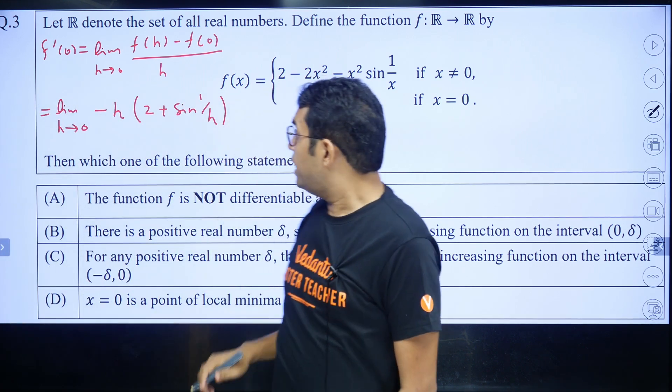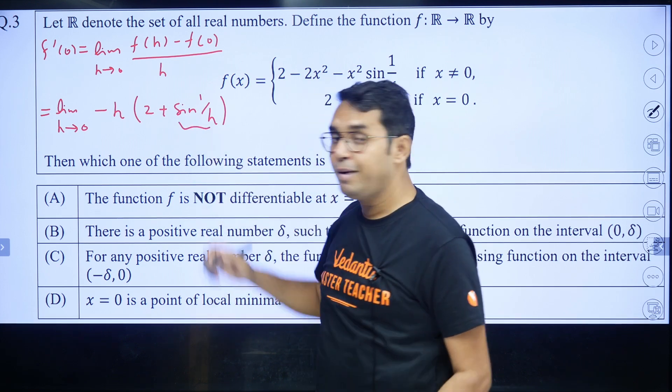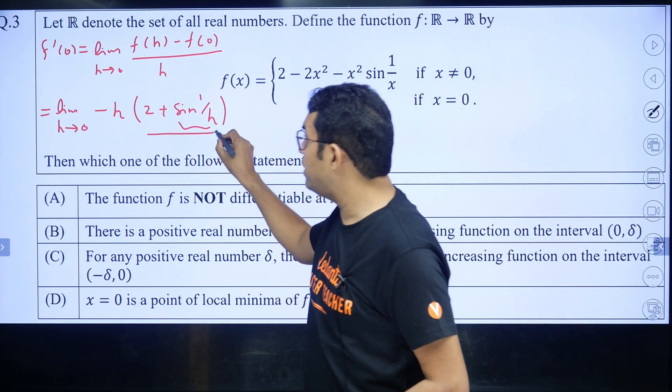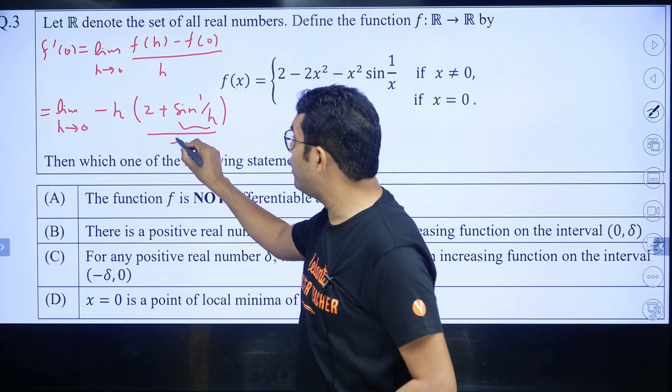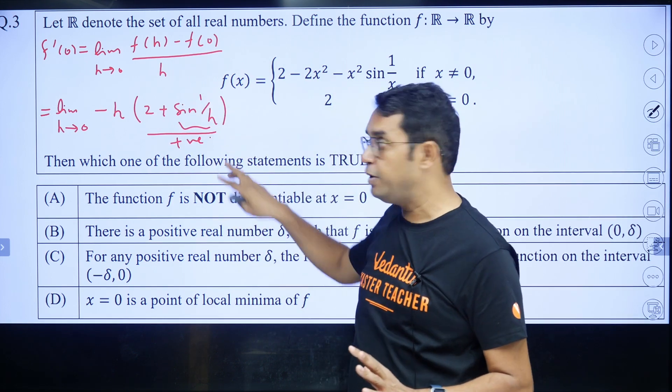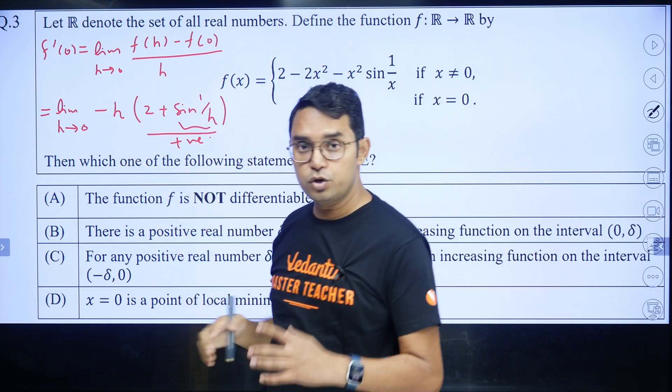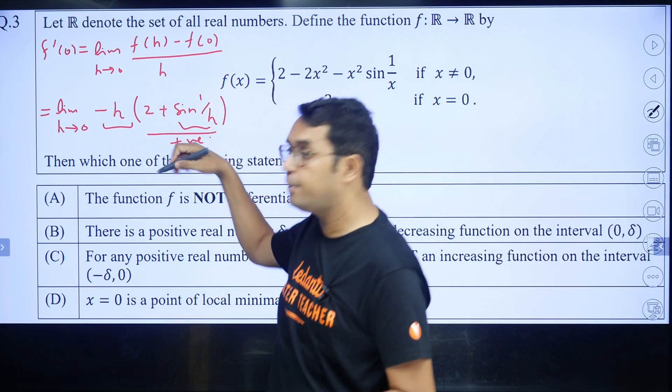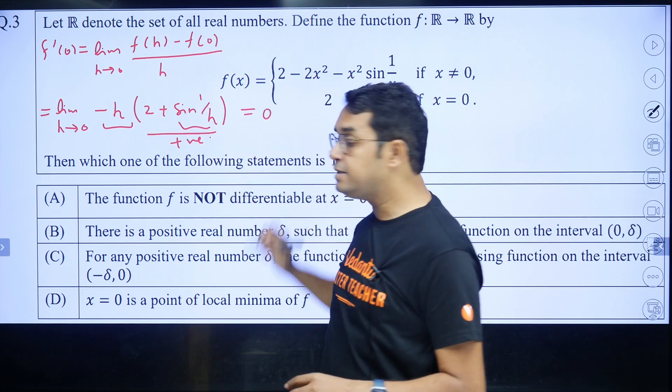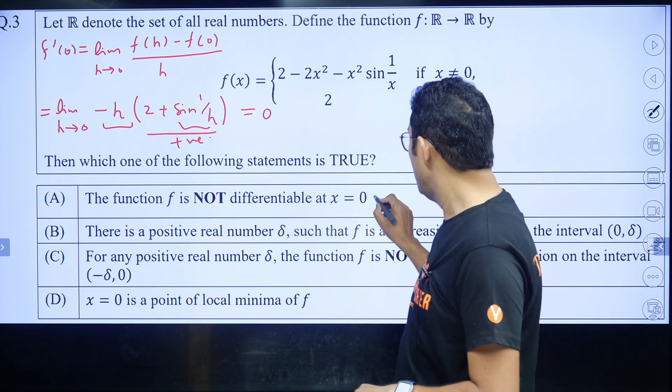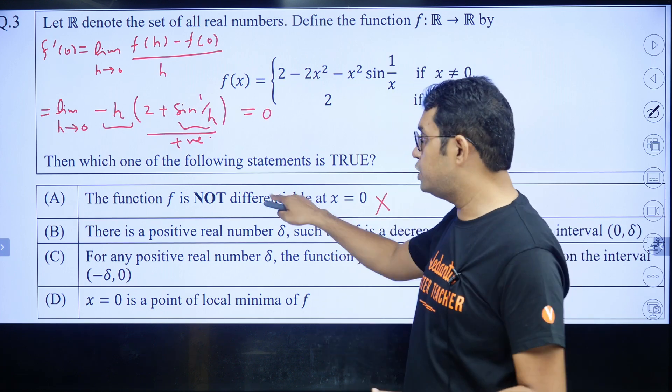Please see, as h → 0, sin(1/h) will be an oscillating function between -1 to 1. So this entire thing will be oscillating between 1 to 3, but as h approaches 0, whether from the positive or negative side, this will make the entire product equal to 0. Hence, the function has LHD and RHD both equal to 0, so this function is differentiable. So this option is wrong.